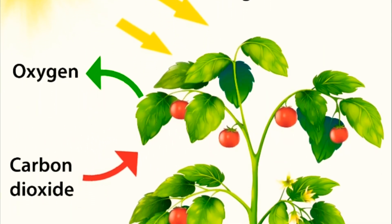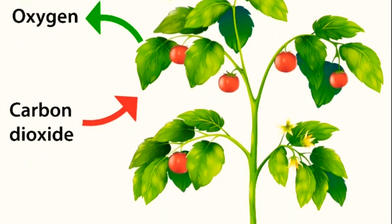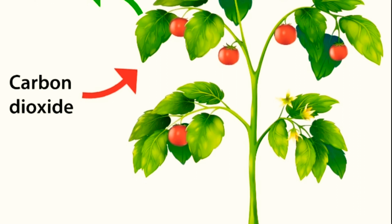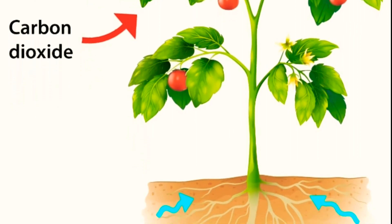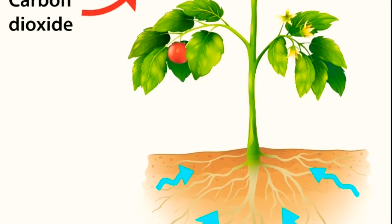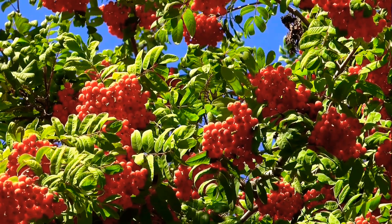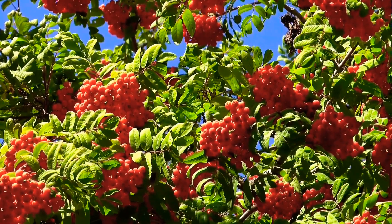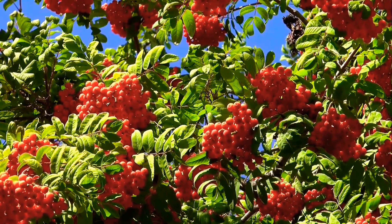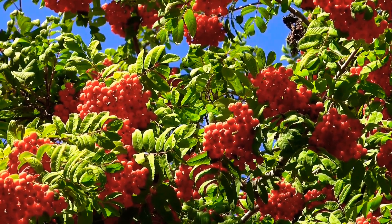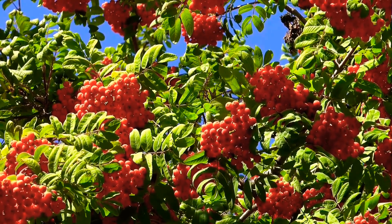Plants make their own food through the physiology and biological chemical processes of individual plant cells. Plant cells contain chlorophyll, a chemical compound that interacts with photosynthesis — the process by which green plants and certain other organisms transform light energy into chemical energy. During photosynthesis in green plants, light energy is captured and used to convert water, carbon dioxide, and minerals into oxygen and energy-rich organic compounds.